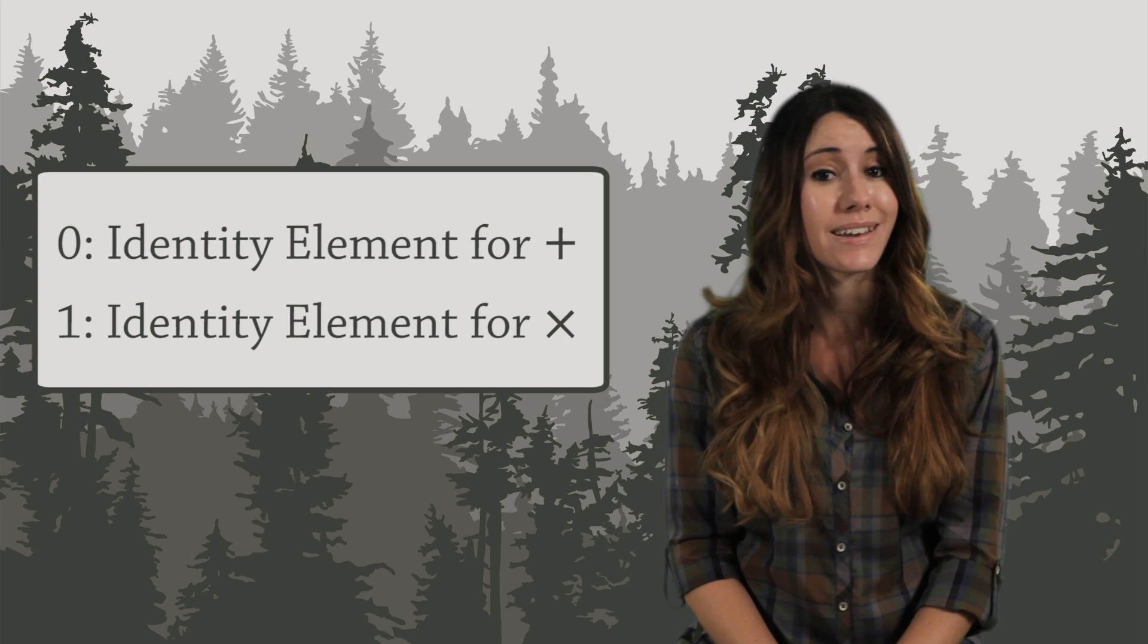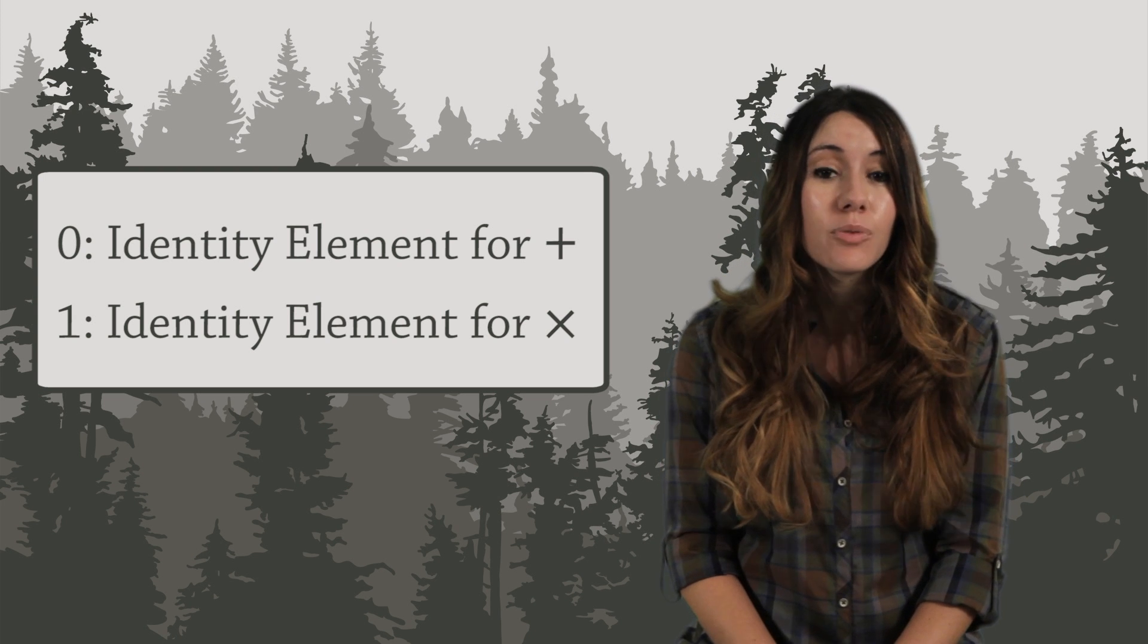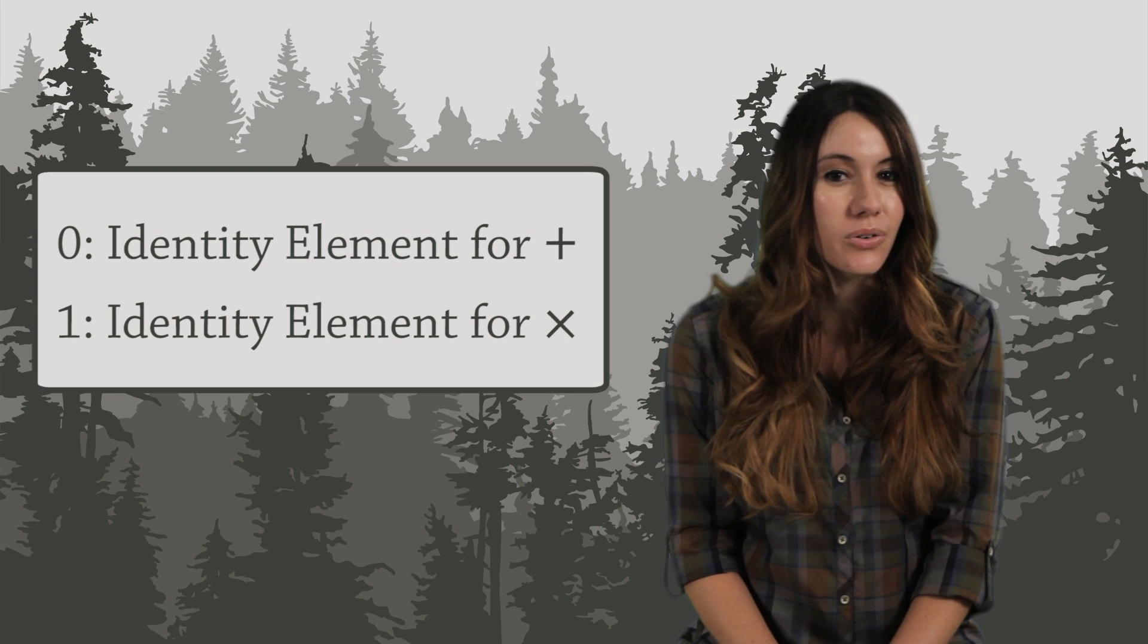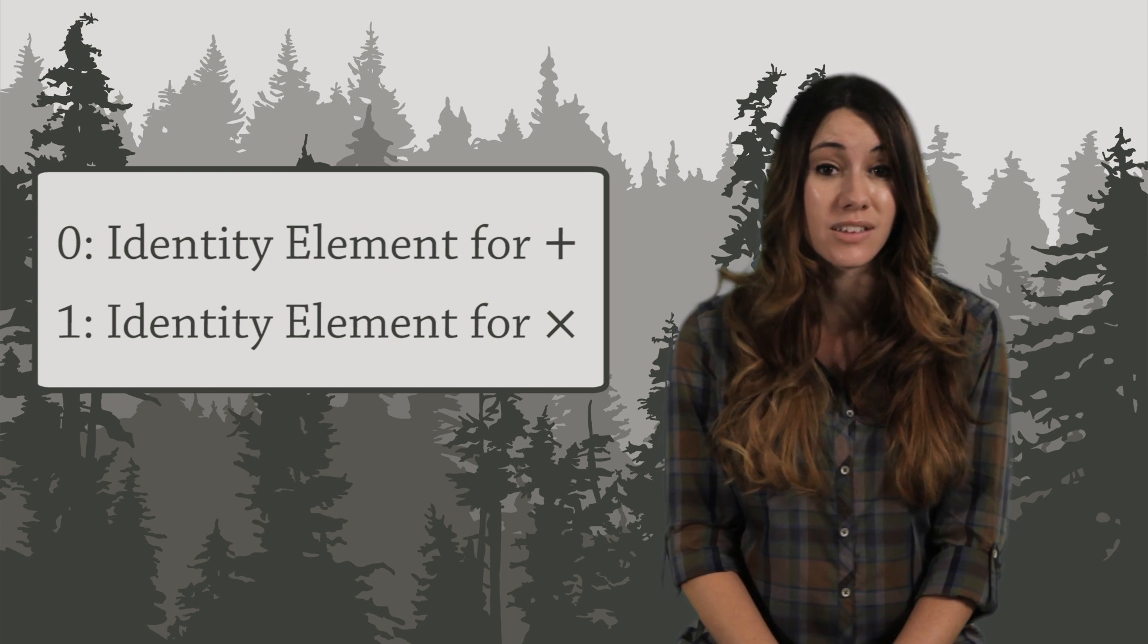0 is not the identity element for multiplication. If you multiply, say, 4 by 0, you don't get 4. You get 0.